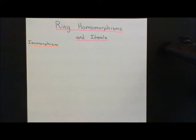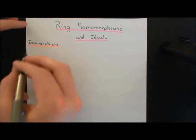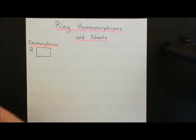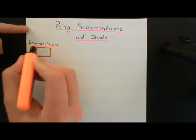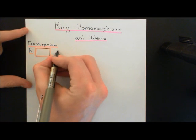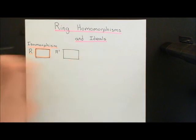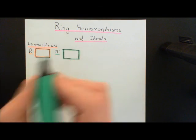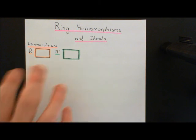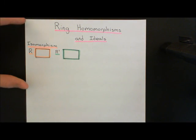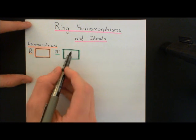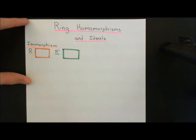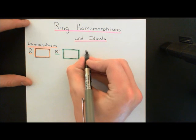A ring isomorphism is an algebraic equivalence. If we have two rings — let's call them R (shown in orange) and R' (shown in green) — and if these two rings are isomorphic to one another, it means that the algebraic structure is identical between the two. In fact, the only difference between these two rings is that you have used different symbols in the two different rings.